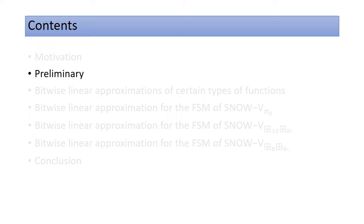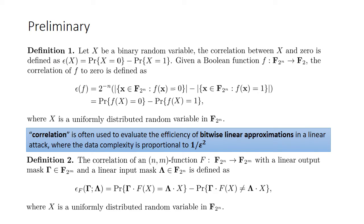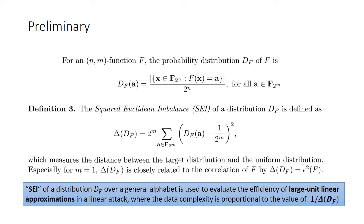Before describing the main work, we introduce some concepts used in this paper. Definition 1 describes the correlation of a Boolean function. Correlation is often used to evaluate the efficiency of bytewise linear approximations in linear attacks. Definition 2 describes the correlation of an N-to-M function on any given input and output mask. For an N-to-M vectorial Boolean function F, the SEI is defined as in Definition 3, which measures the distance between the target distribution and the uniform distribution. Especially for M equals 1, the SEI of F equals the squared correlation of F. SEI is used to evaluate the efficiency of large unit linear approximations in a linear attack.